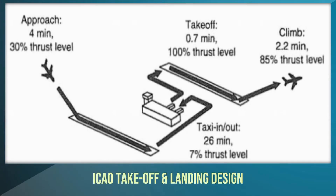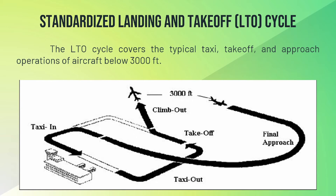The ICAO takeoff and landing design consists of the approach, taxi, takeoff, and climb of an aircraft. The approach takes 4 minutes at 30% thrust level. Taxi in or out takes 26 minutes at 7% thrust level. Takeoff takes 0.7 minutes at 100% thrust level. And the climb takes 2.2 minutes at 85% thrust level. The LTO cycle covers the typical taxi, takeoff, and approach operations of aircraft below 3,000 feet, because emissions below this altitude are considered primary contributors to surface air quality impacts.